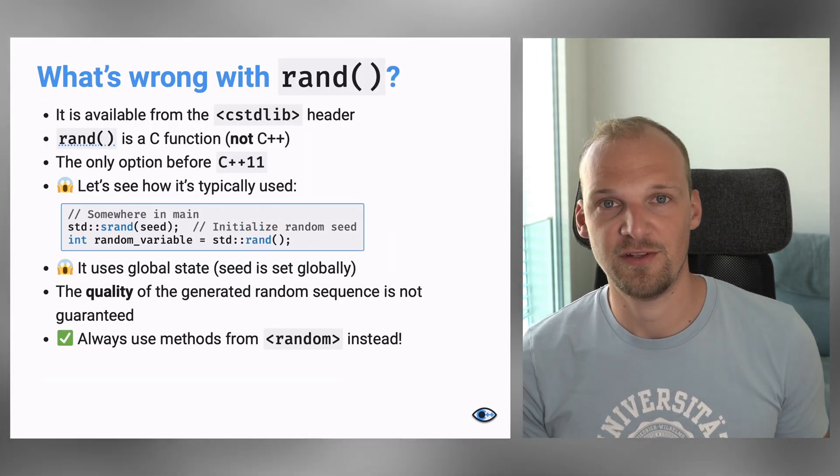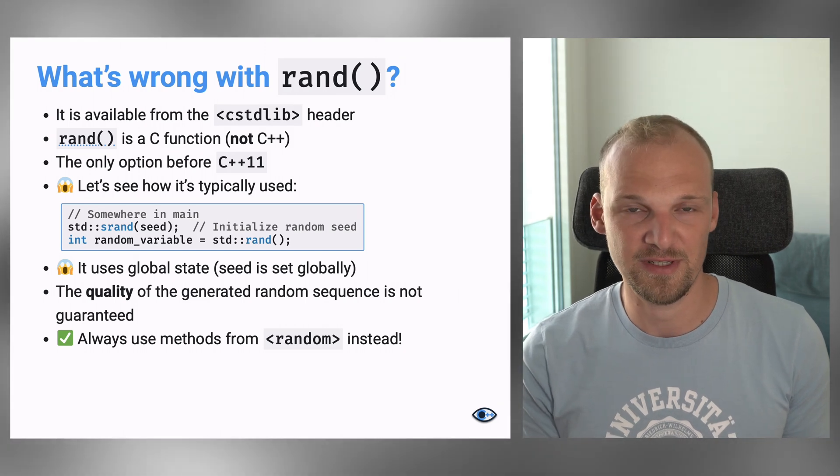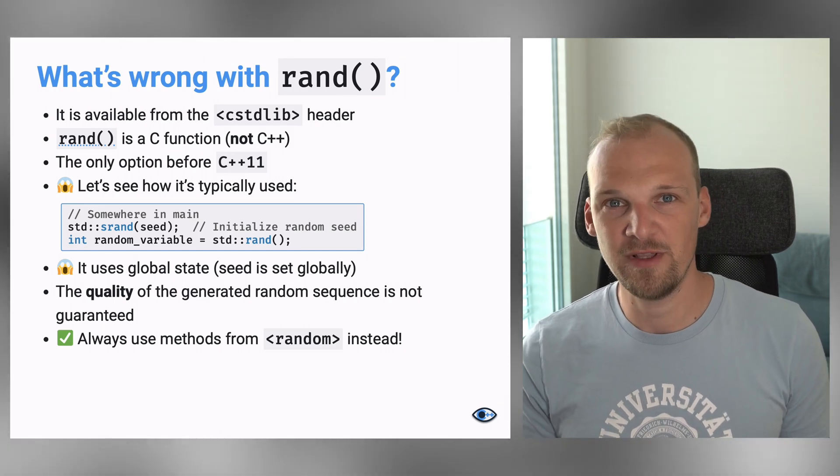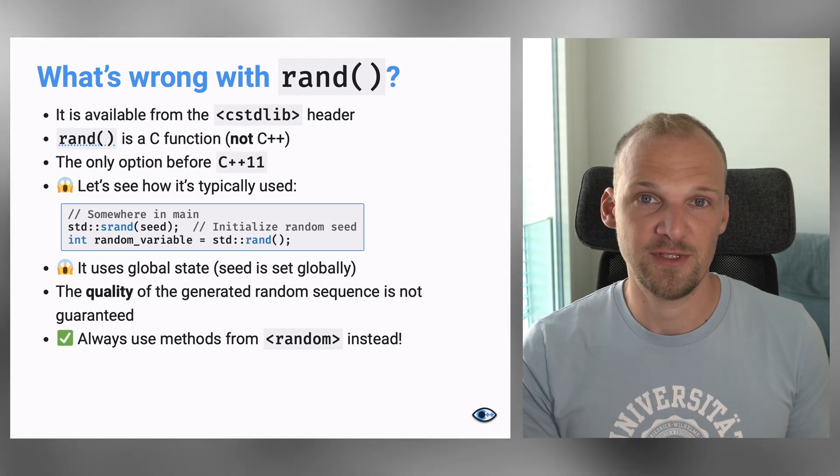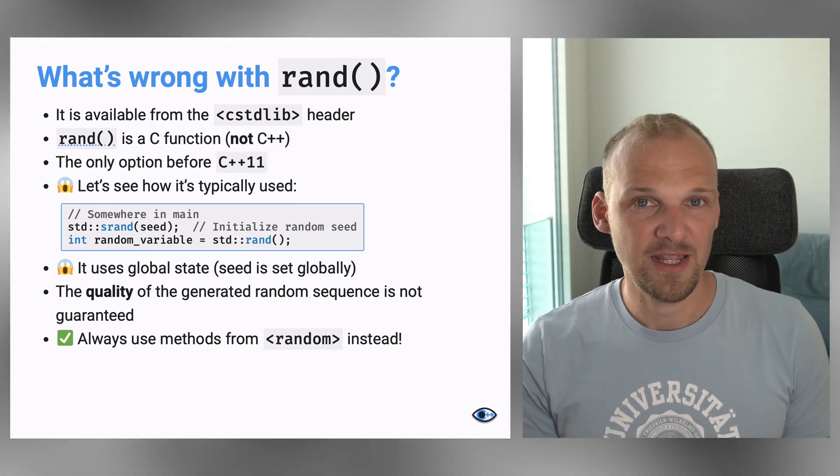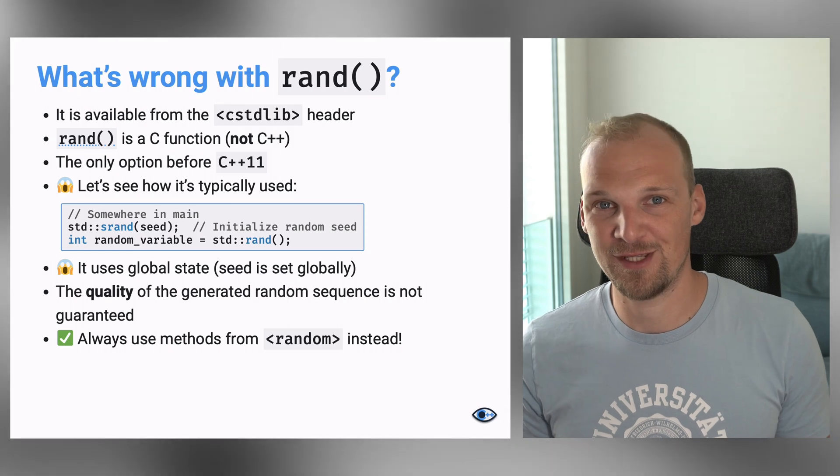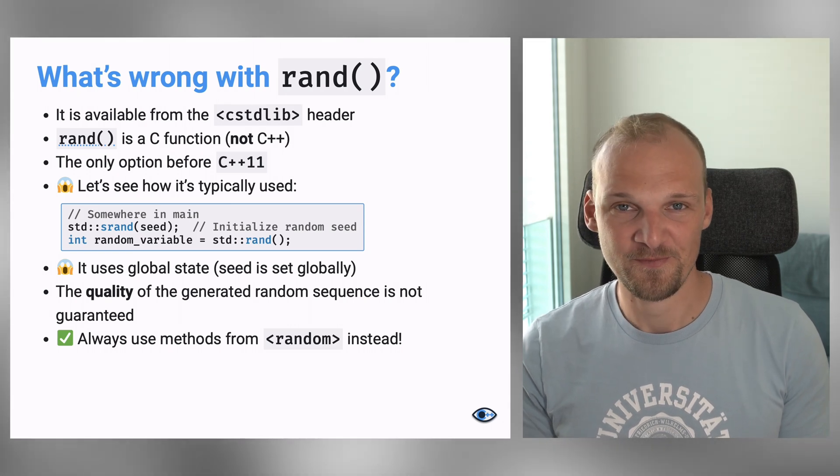Now, if you try to search the internet for how to generate random numbers in C++, you will probably very quickly get to the suggestion of using the rand function. Now, I want to explicitly address what is wrong with the rand function.